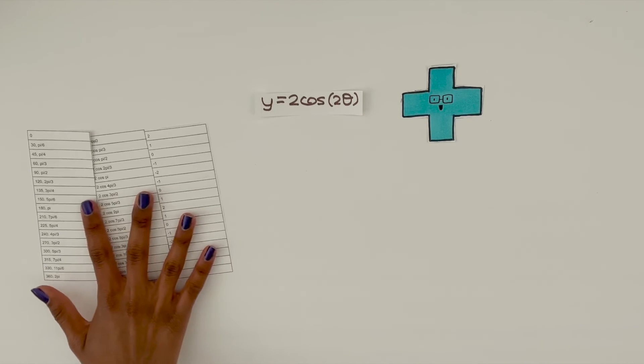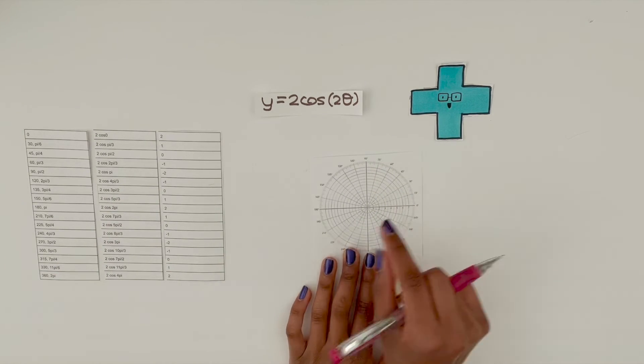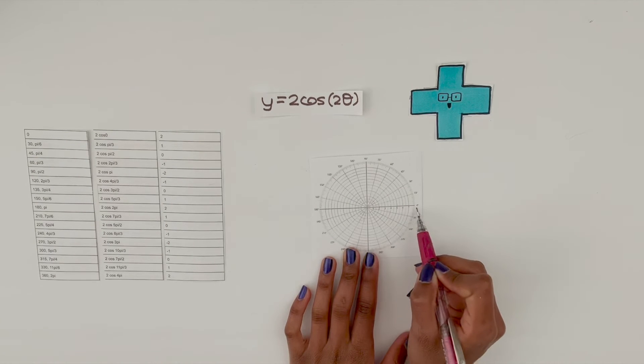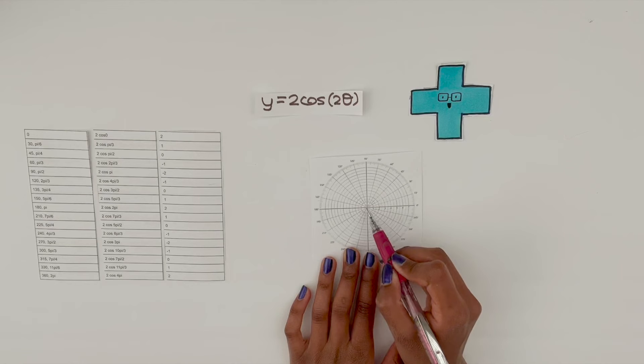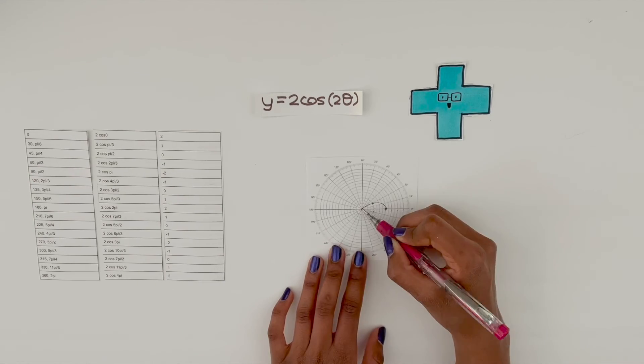Now it's time to graph. Let's plug these values onto our circular polar coordinate plane. Let's look at the first value when theta equals 0, and we see that r should equal 2. Let's put a point there and repeat the same process for the rest of the angles.